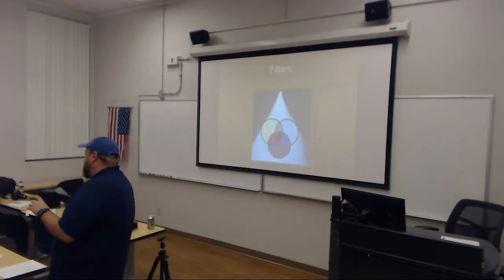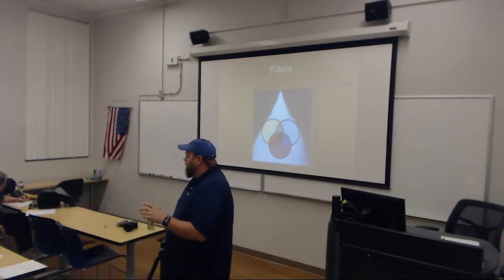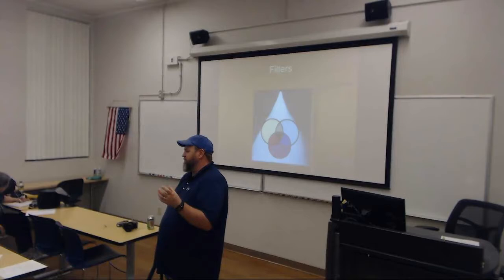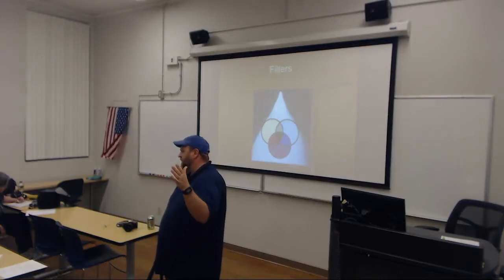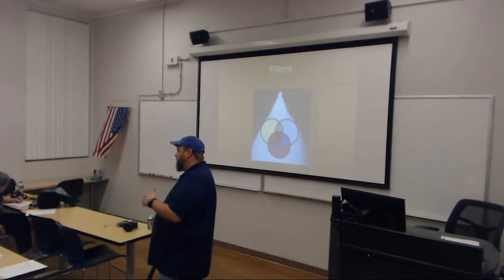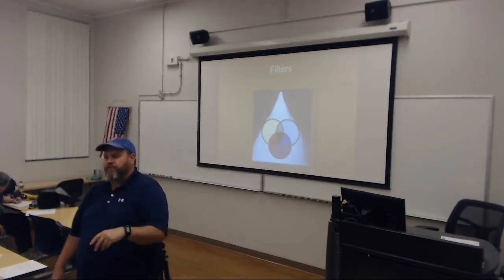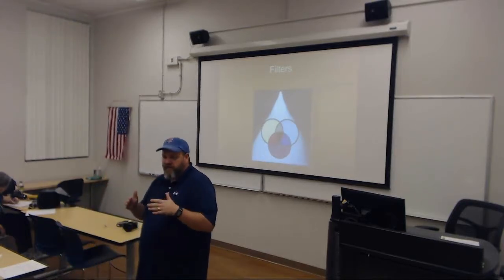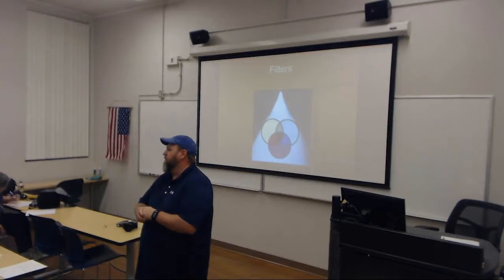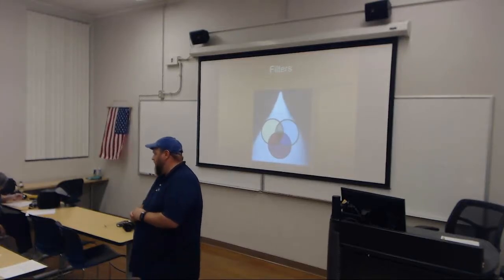Another type of filter that doesn't have any effect on color is called a neutral density filter. The best way to think about a neutral density filter is it's kind of like sunglasses for your camera. All it really does is cut down all the light entering the camera so that it's not quite so bright. So if you were taking photos in really bright, sunny conditions and needed to decrease the amount of light a little bit, you'd use a neutral density filter.